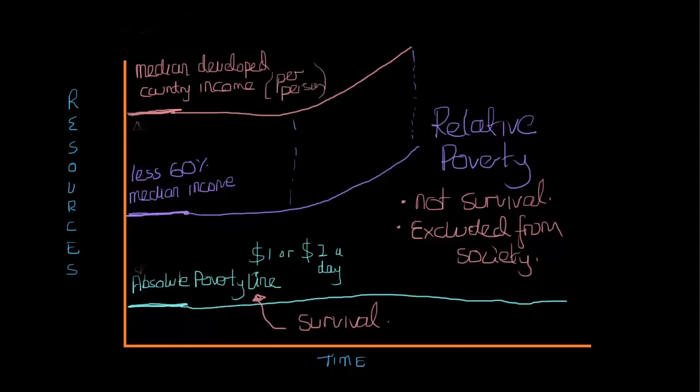So this really separates out this absolute poverty line, which is a measure across all countries, and it tends to be a single standard, from this relative poverty, which is related to the society or the country or the environment where an individual is living.